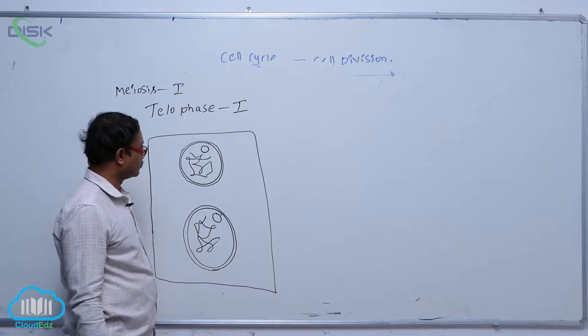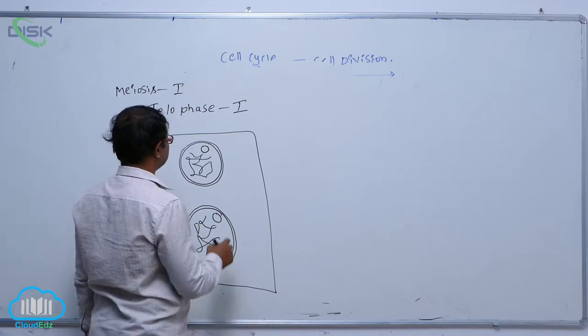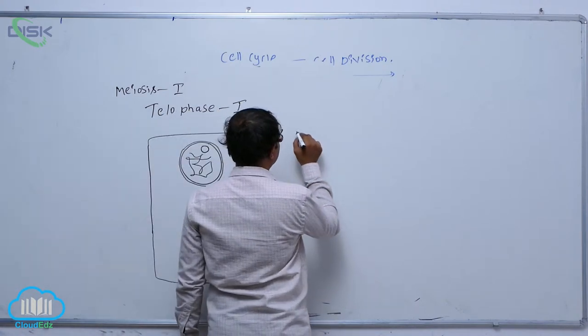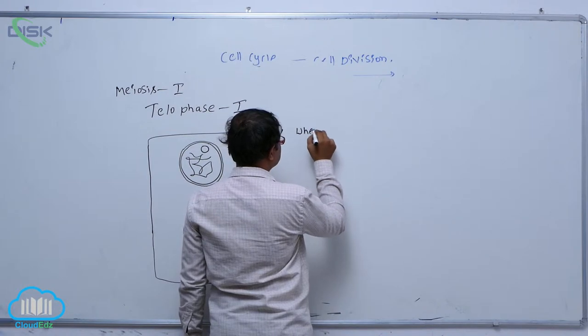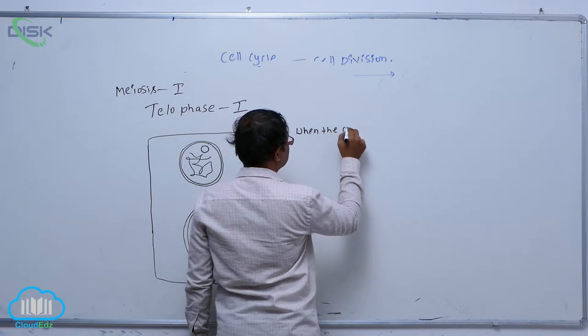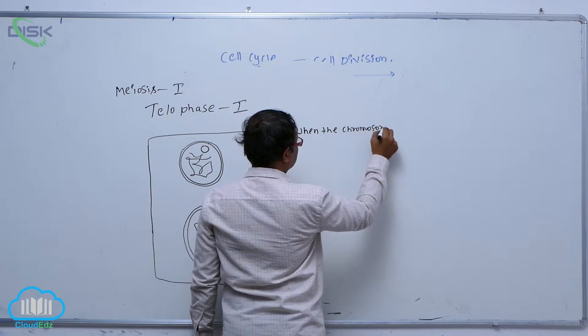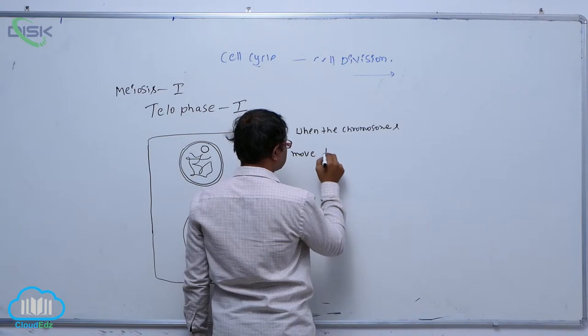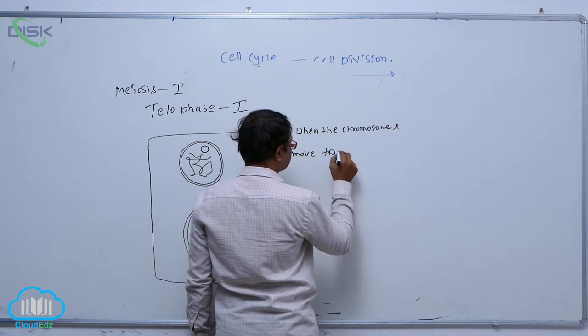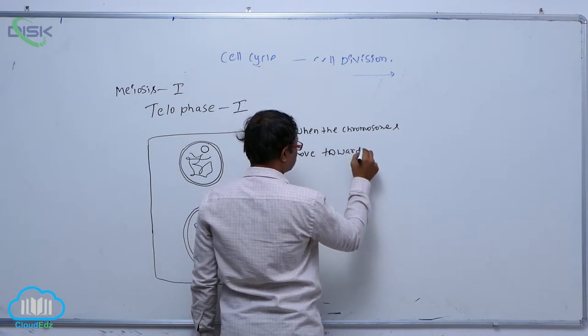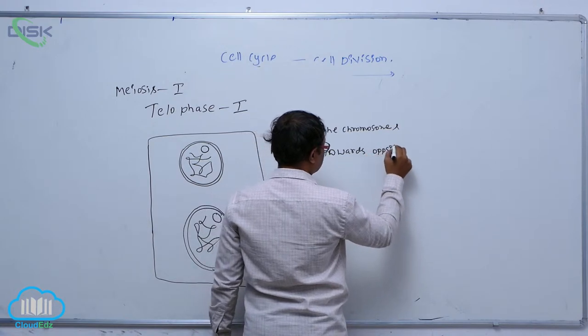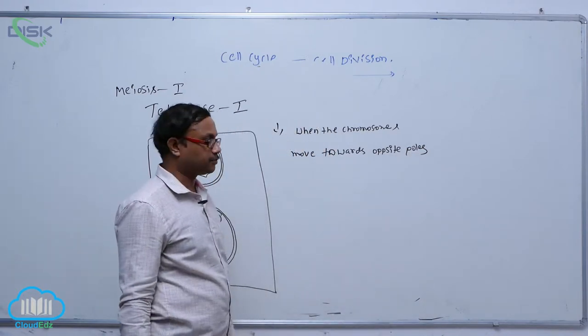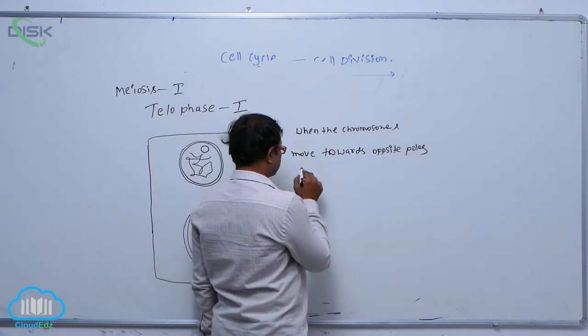In telophase 1, when the chromosomes move towards opposite poles, spindle fibers disappear.